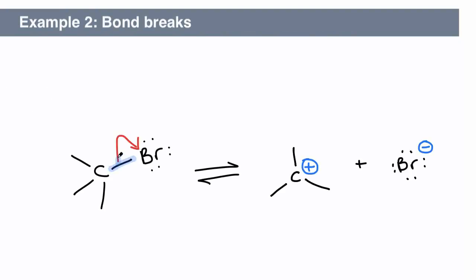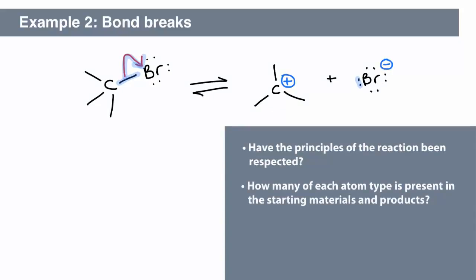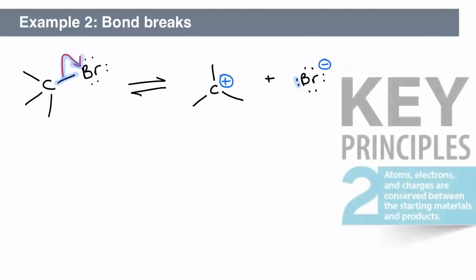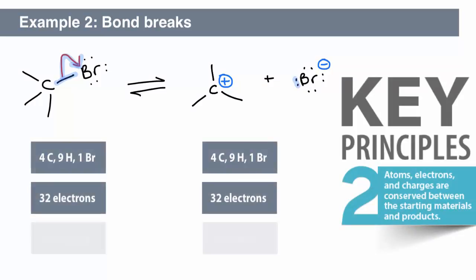In this example, the arrow describes the carbon-bromine bond breaking and the two electrons going to bromine. Have the principles of the reaction been respected? How many of each atom type is present in the starting material and products? How many electrons? What is the overall charge? The principles of the reaction have been respected. There is the same number of atoms, electrons, and charges in the starting materials and products.